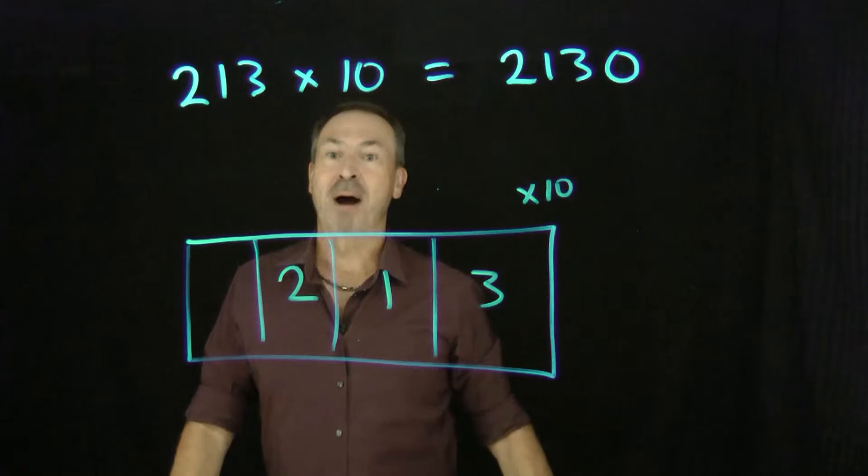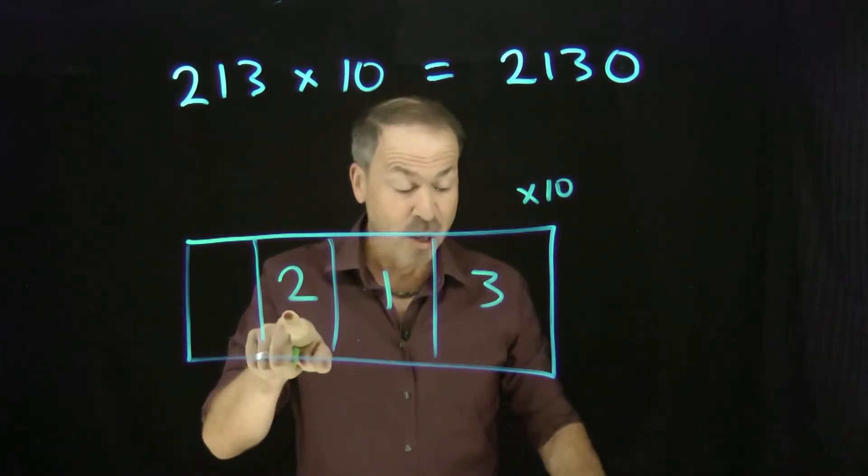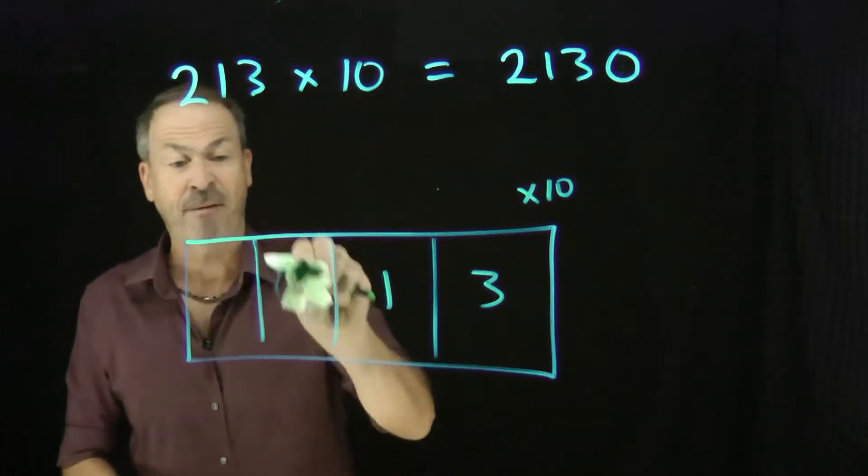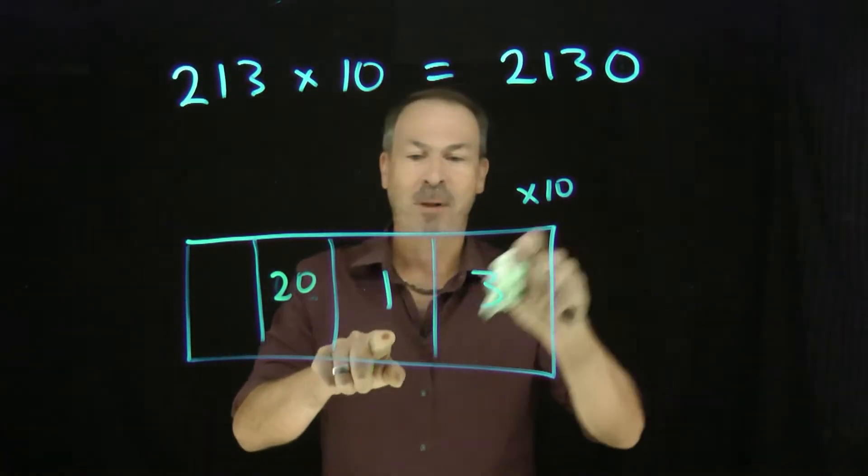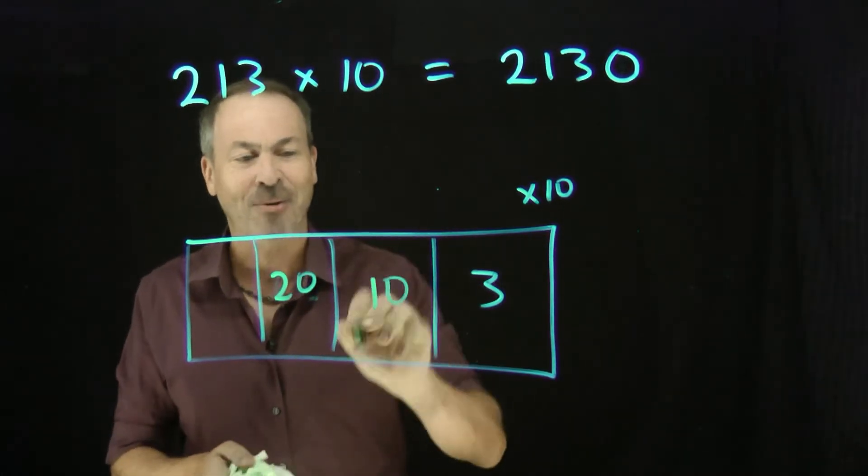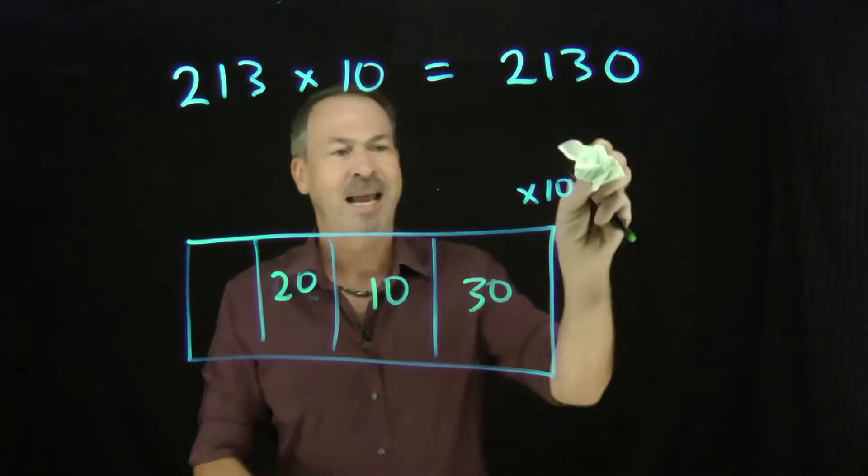And I want to multiply everything by 10, scale it up by a factor of 10. Okay, so I have two hundreds and I multiply it by 10. I guess I'm going to have 20 of those, 20 hundreds. If I've got one ten and I multiply it by 10, I guess I'm going to have 10 of those, 10 tens. And three ones that are multiplied by 10 will now become 30 ones.